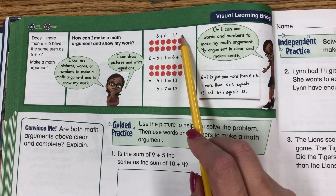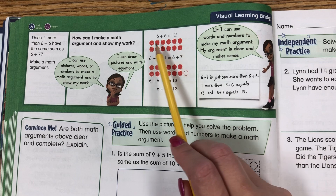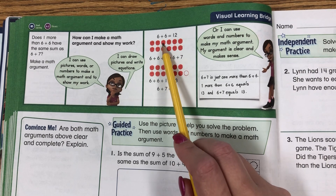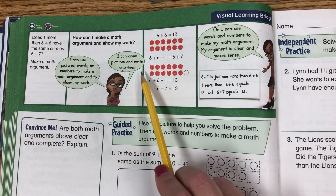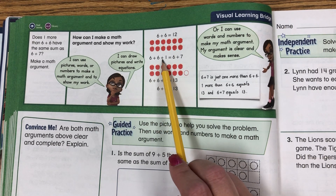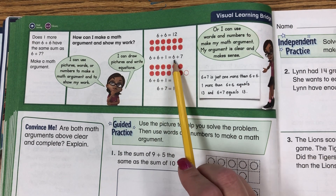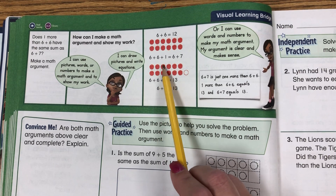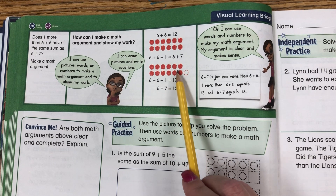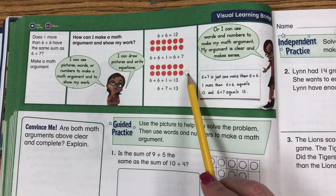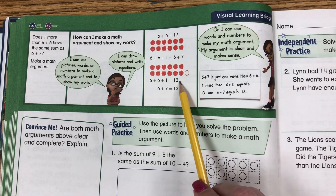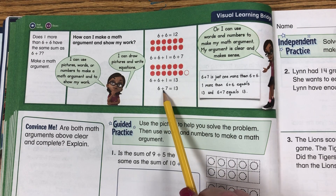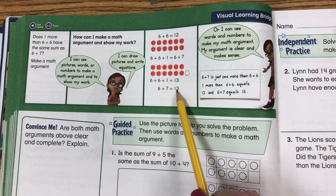So 6 plus 6 equals 12. Here are my counters that show 6 plus 6 and there are 12 of them. Now 6 plus 6 plus 1 more equals 6 plus 7. So here's my 6 plus 6, my 12 counters, and I'm adding one more. 6 plus 6 plus 1 equals 13. So 6 plus 7 equals 13.